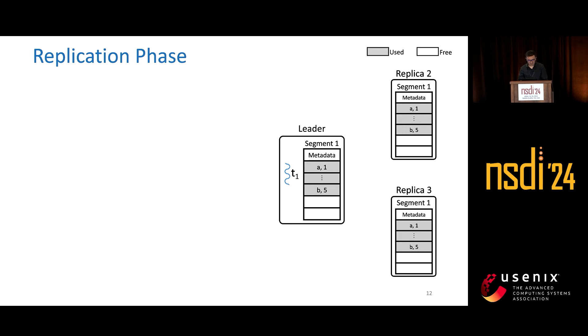Let's look at the details of each phase. In the replication phase, the thread will receive requests from the client. In this figure, we use gray blocks to indicate used segment store entries and white ones to indicate free segment store entries.